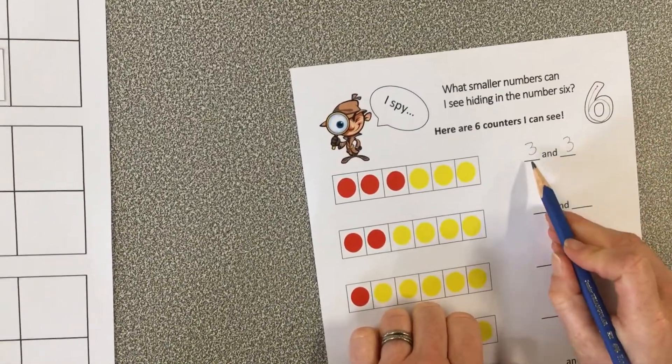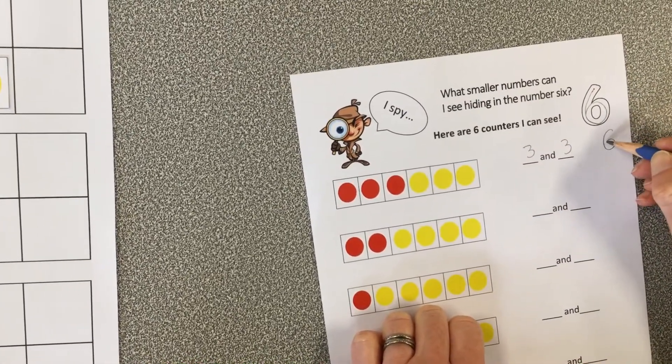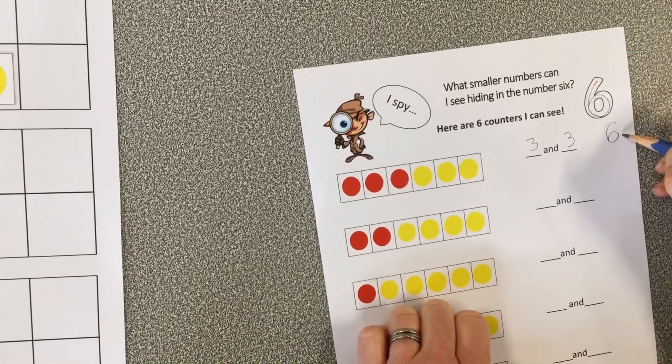So now I can write it here. Three and three. And I can put a big six over here because when they're together, they make six.